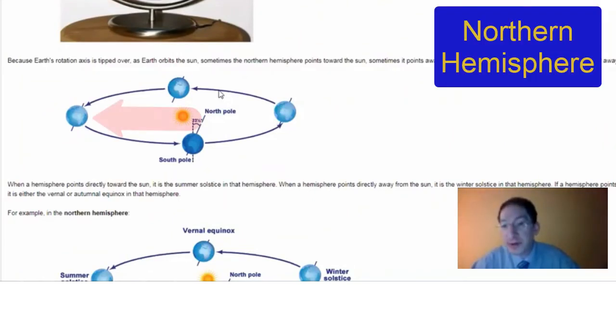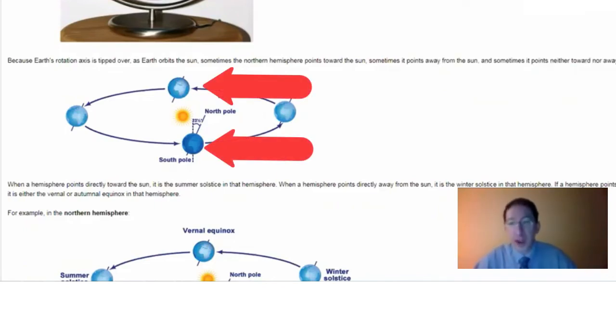So sometimes your hemisphere is tilted towards the sun, and this is summer in your hemisphere. And sometimes your hemisphere is tilted away from the sun, and this is winter in your hemisphere. And sometimes you're neither tilted toward nor away from the sun, and these are the equinoxes.